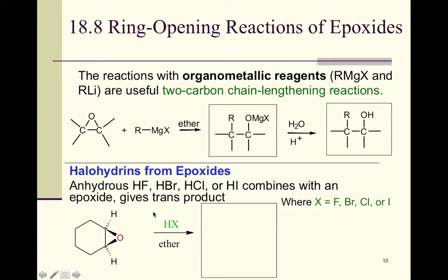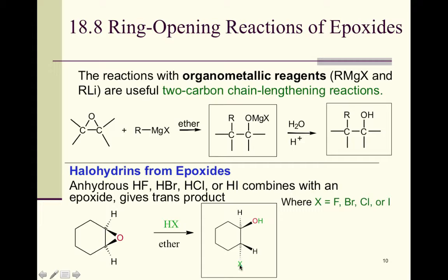Halohydrins can also be formed from epoxides by treating them with anhydrous HX in ether. Unusually, all four halogens — F, Cl, Br, and I — are possible for this reaction. Because of the ring strain, the reaction proceeds under mild conditions. The result is an anti-addition: the OH and the halogen end up trans to each other. This gives the trans product.